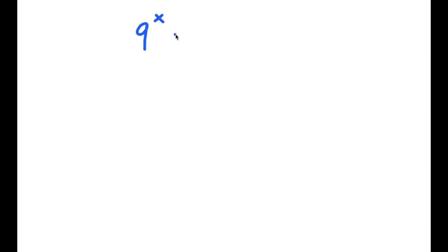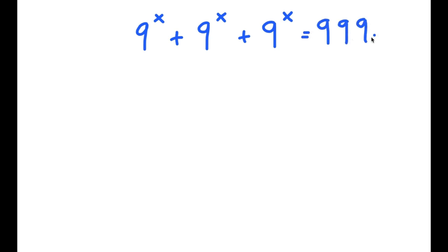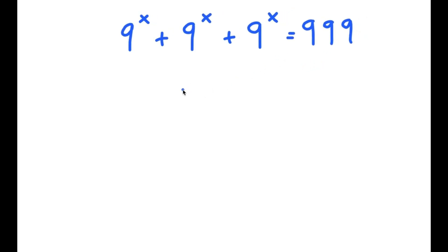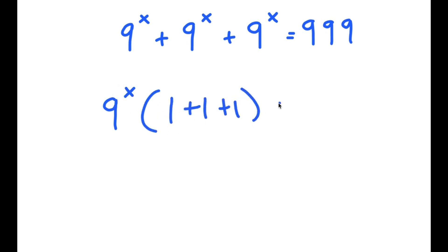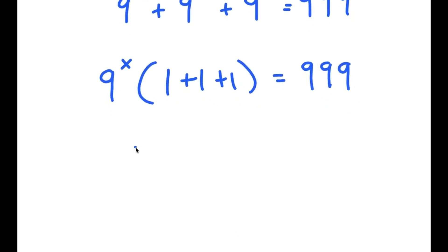In this video, I'm going to solve the equation 9 to the power of x plus 9 to the power of x plus 9 to the power of x is equal to 999. To solve this, I'm going to first start by factoring out 9 to the power of x on my left hand side. So I get 9 to the power of x times 1 plus 1 plus 1 is equal to 999. Now 1 plus 1 plus 1 is 3, so I get 9 to the power of x times 3 is equal to 999.